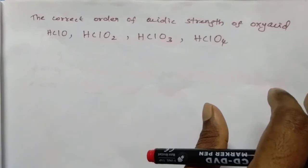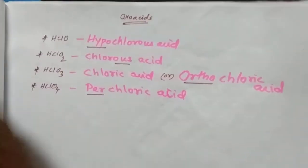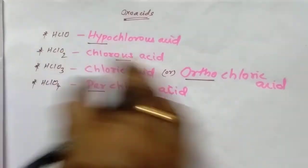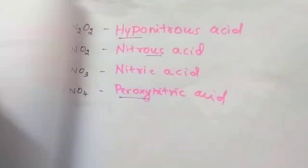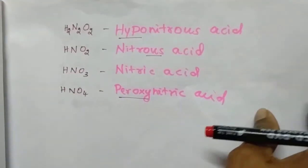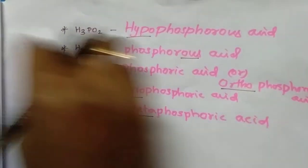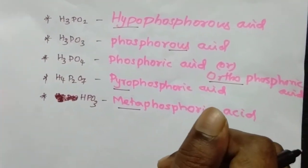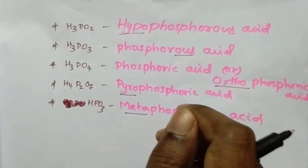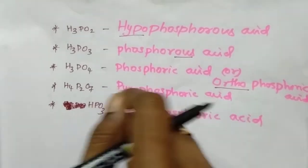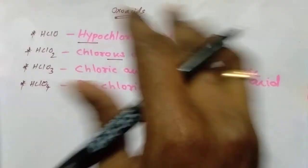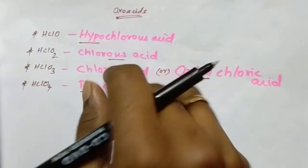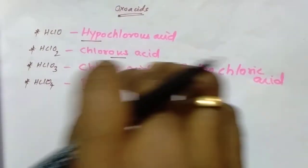I hope you know these oxy acids. This is the Chlorine Oxy Acids. This is the Sulfur Oxy Acids. This is the Nitrogen Oxy Acids. These are the Phosphorus Oxy Acids. Is there any pattern in these oxy acids? Yes, these oxy acids have the same pattern. What is that pattern? That is our today's trick.